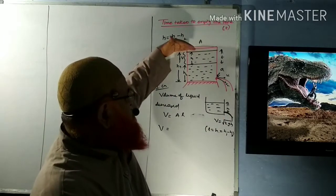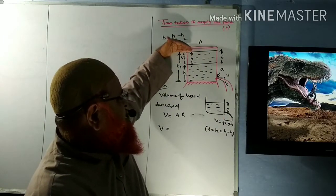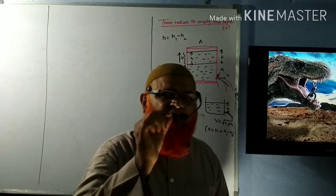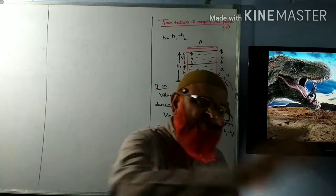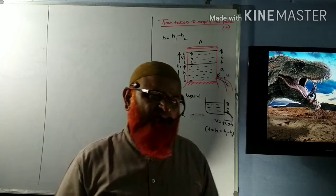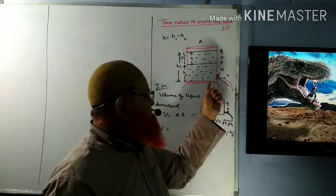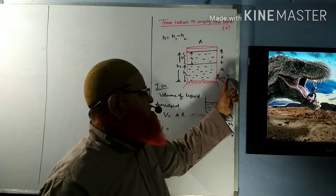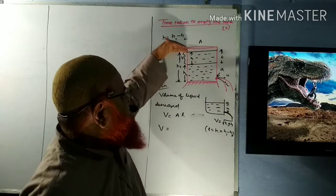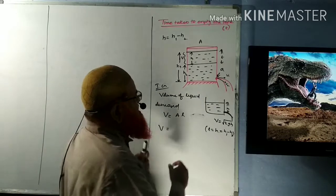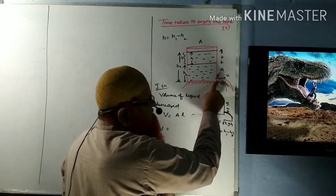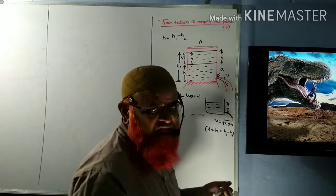When the liquid is up to level H1, there is a very small orifice — a very small hole — and the water is coming out from the orifice. The liquid is coming out with speed V1 when the height is H1. As the level of the liquid decreases, the speed of the liquid flow is also decreasing.